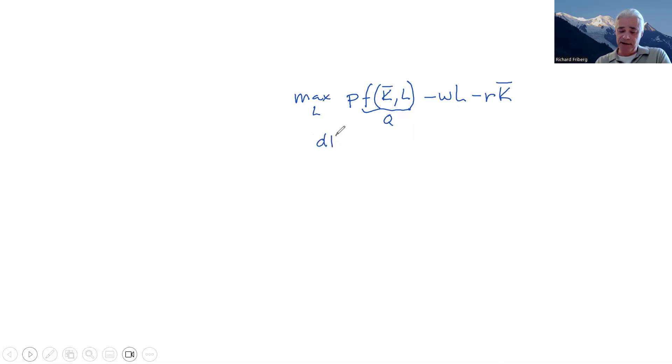So as usual in economics and in the course, we use calculus. We differentiate the profit function. This time with respect to L because that's what we're choosing. So P, we said that was just a constant, times how quantity produced changes as we're changing the amount of labor.